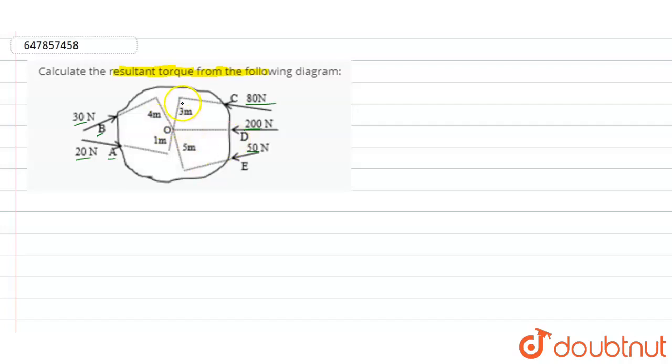Okay, so here the angle formation will be right angle, so the angle will be 90 degrees. So according to the net torque value, the net torque value will be equal to 30 into 4 minus 80 into 3 minus 0.